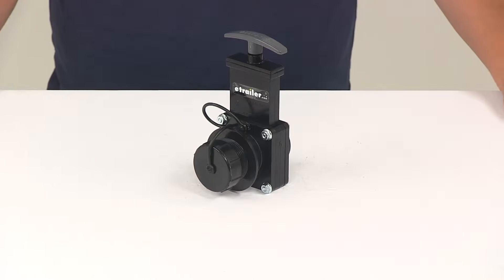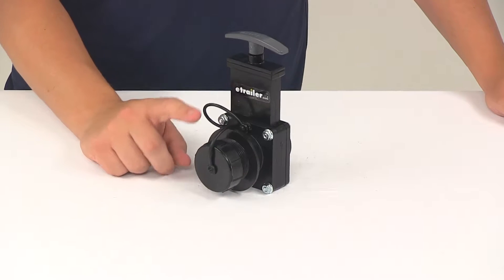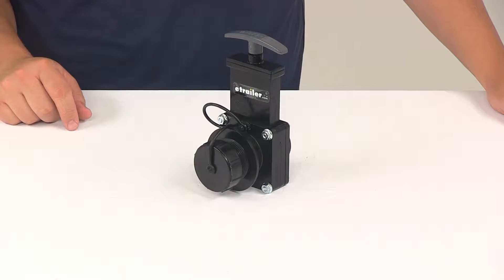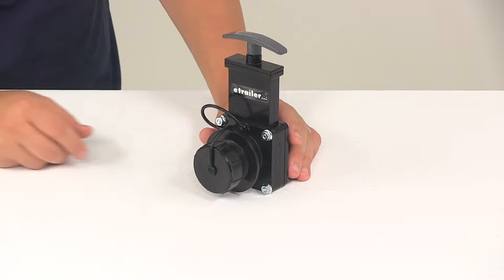Today we're going to be taking a look at the Valterra RV waste valve with the included cap and tether. The unit simply adds or replaces a waste valve in your RV's waste system. It's made from a strong and durable black plastic construction.